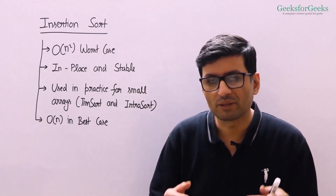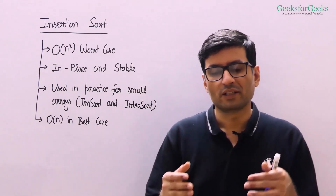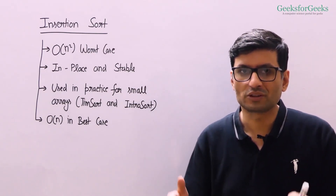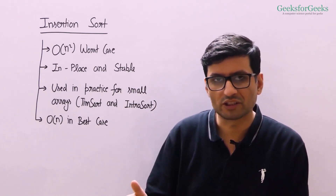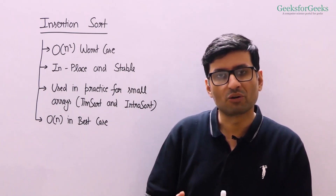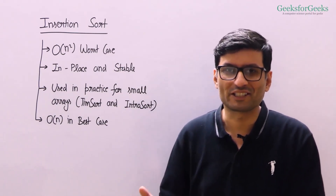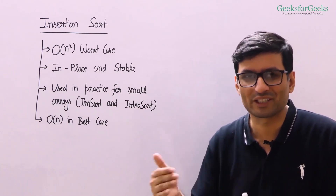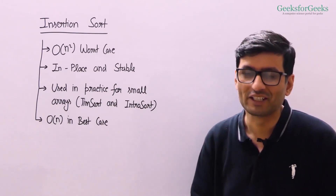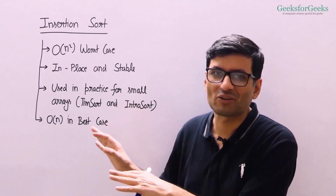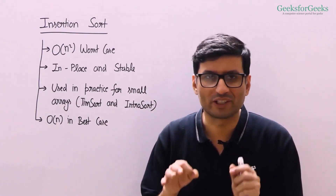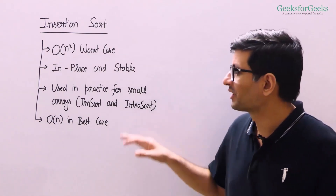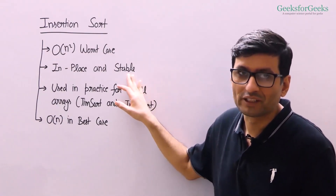So what do we mean by in-place? In-place is typically defined as: an algorithm is called in-place if it does not use any auxiliary array or auxiliary space in terms of input size. There are other definitions — for example, quick sort is called in-place, but it uses a recursion call stack. However, insertion sort takes only O(1) auxiliary space and does not take any space even for recursion.